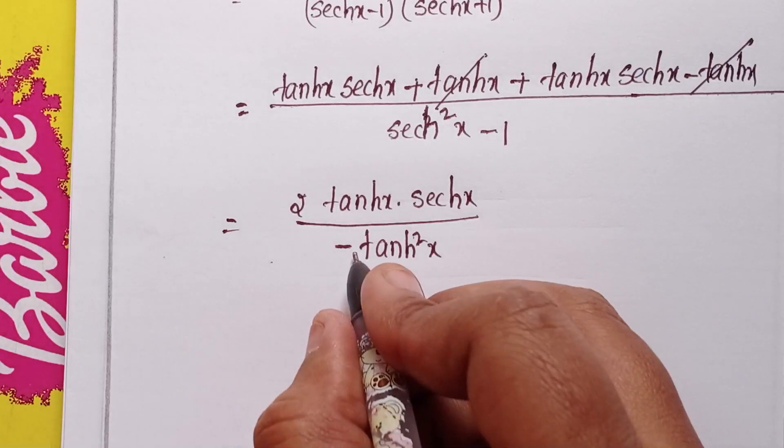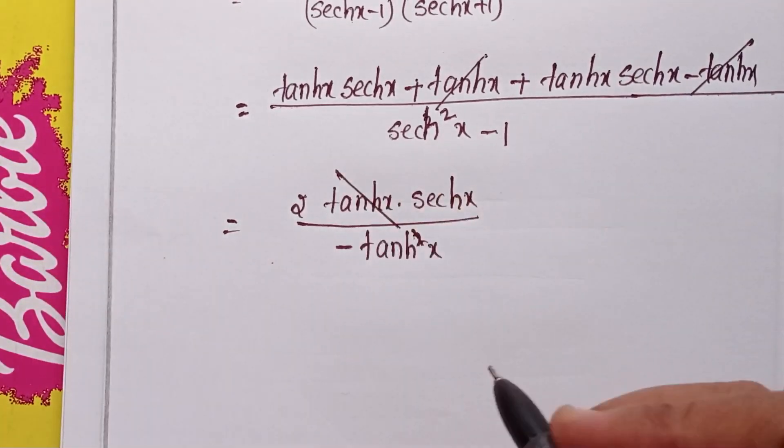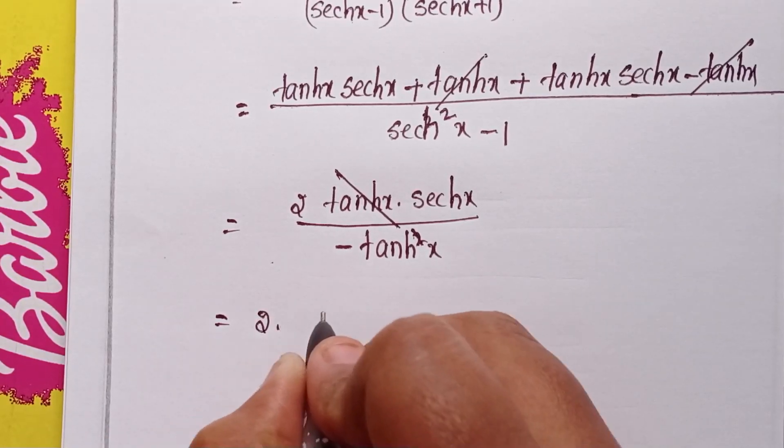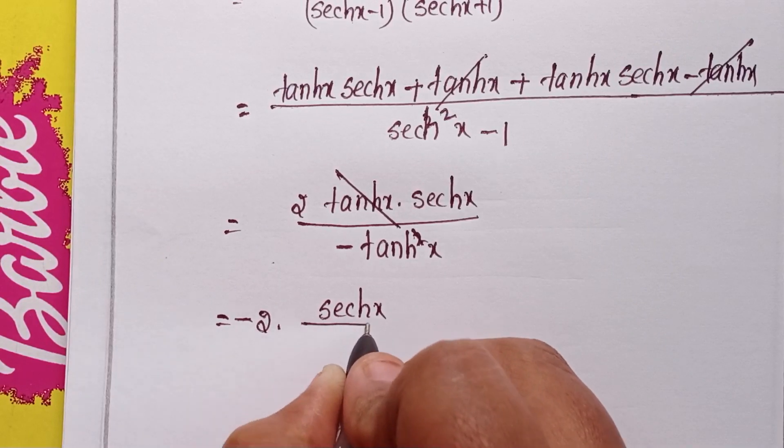We get 2 times sech x times tanh x by minus tanh squared x.